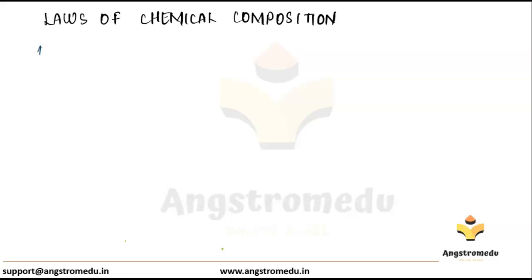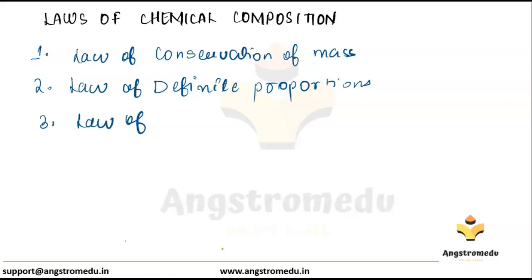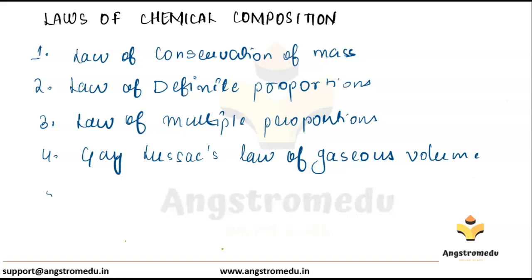There are five laws of chemical composition. First is law of conservation of mass. Second is law of definite proportions. Third is law of multiple proportions. Fourth is Gay-Lussac's law of gaseous volume. And the last and fifth law is Avogadro's law.